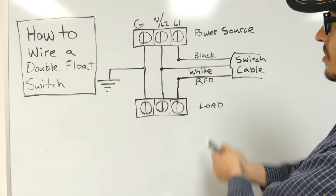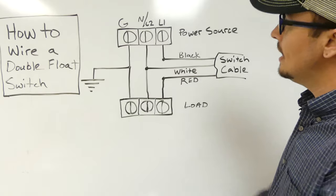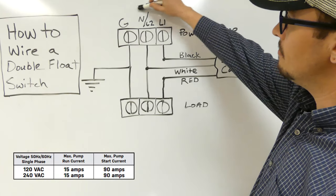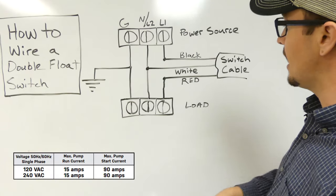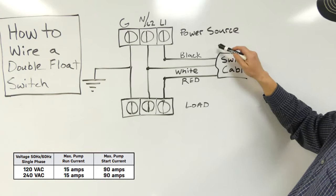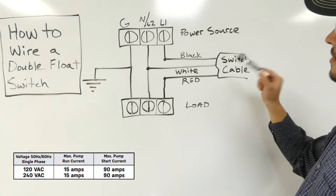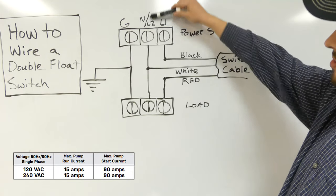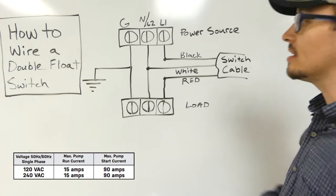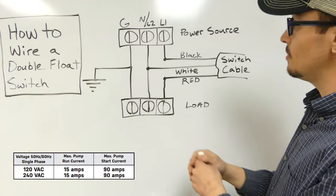All right, so wiring up a double float switch is actually relatively simple. So we've got ground, of course, so we don't have to touch that. The double float switch, as I mentioned, has three wires. So what we're trying to do is with our white wire, hook that into our neutral or our L2, depending on if it's 120 or a 240 volt system.